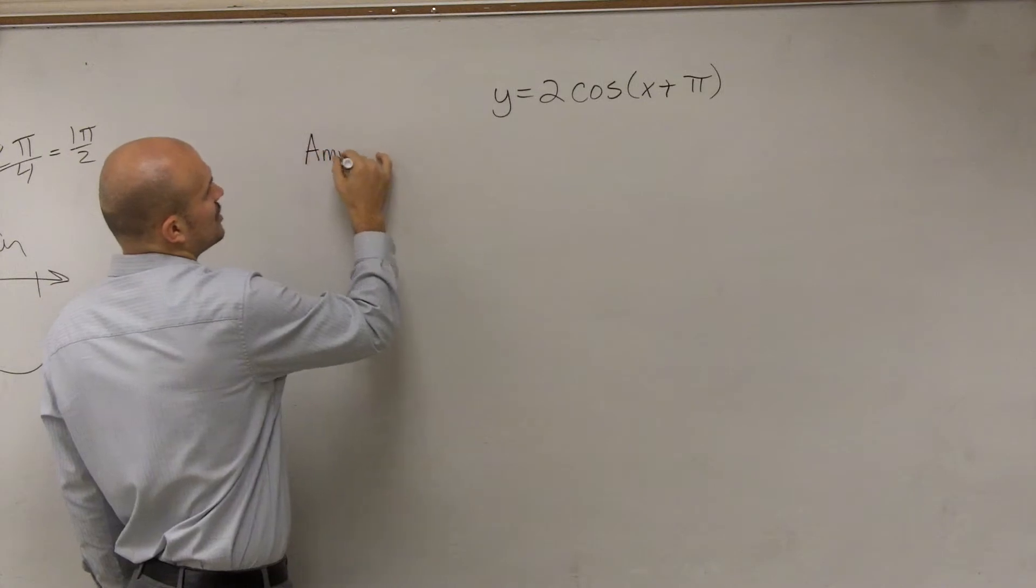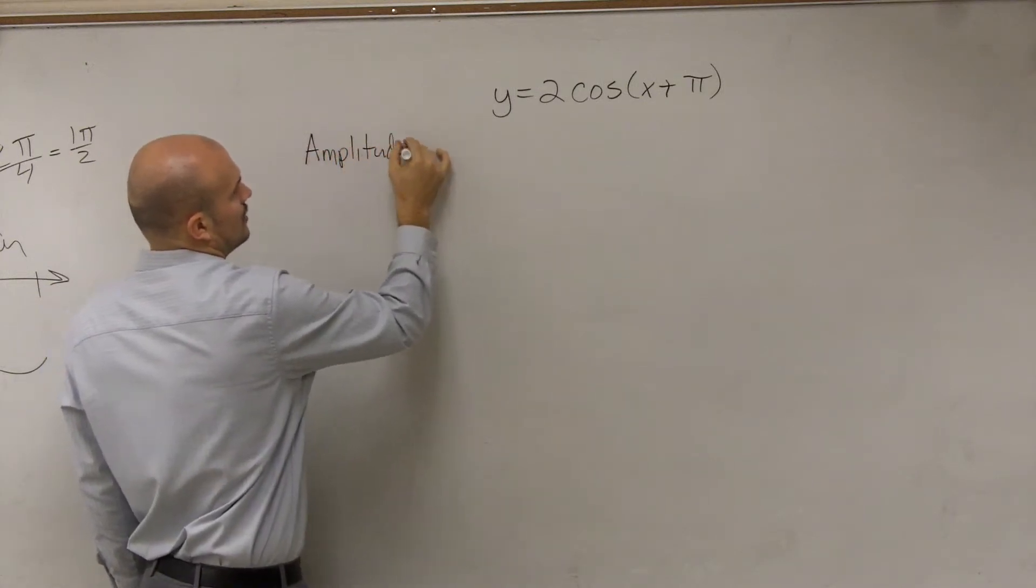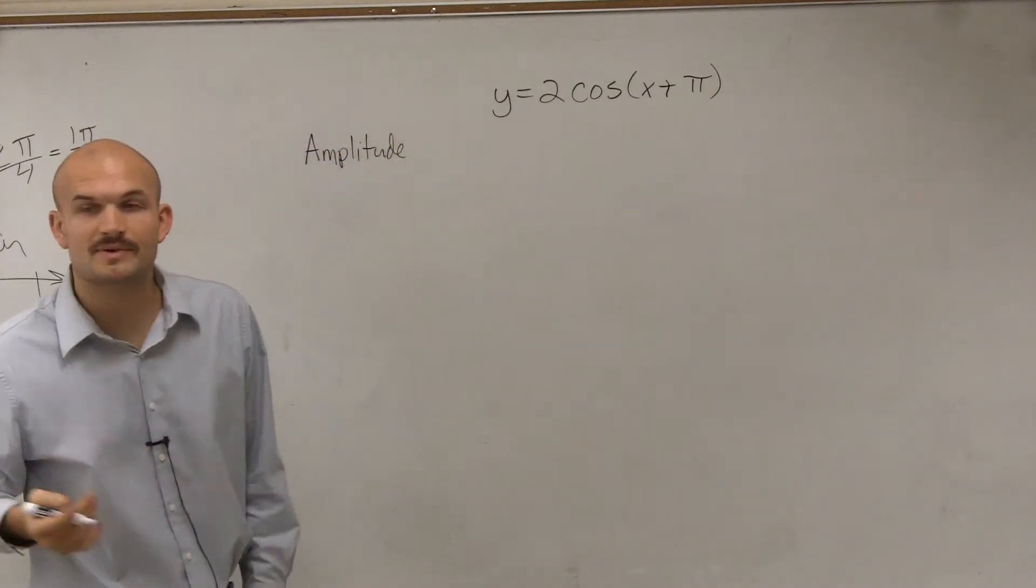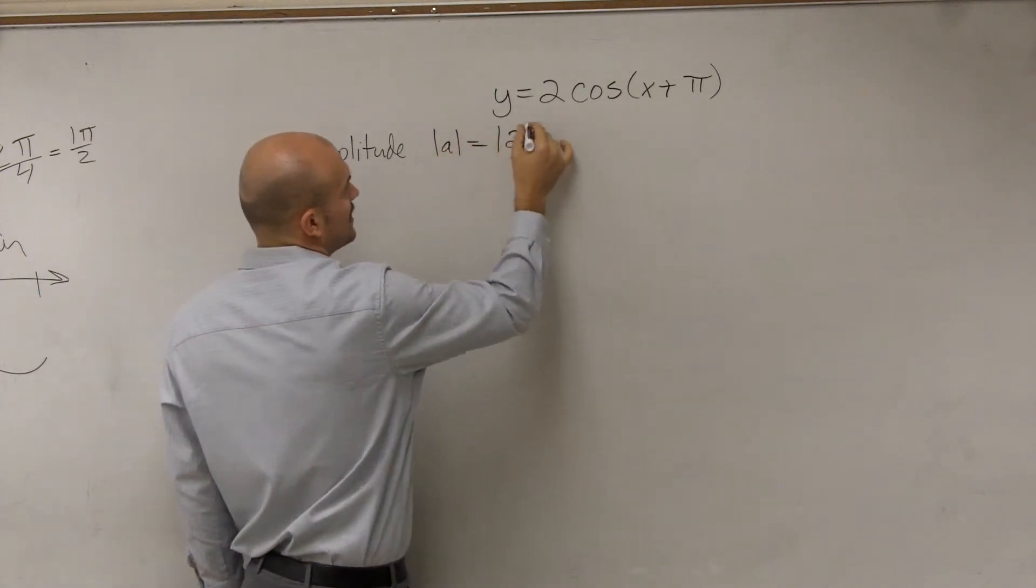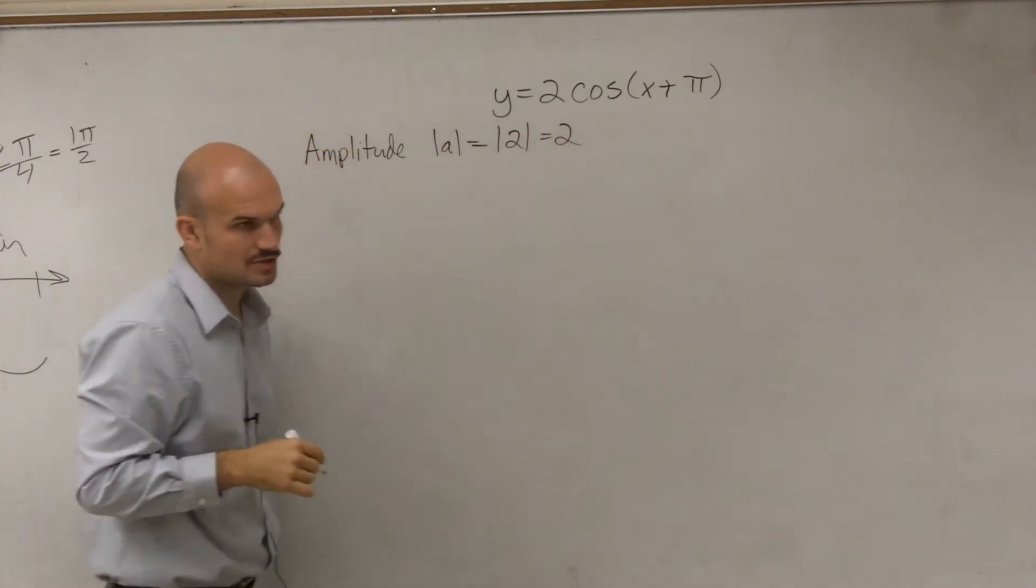So the first thing we're going to do is determine the amplitude. As explained, the amplitude is going to be your absolute value of a, which in this case is the absolute value of 2, which is equal to 2.